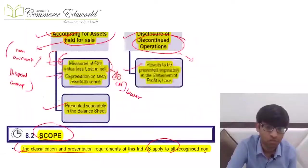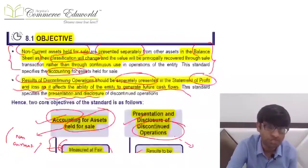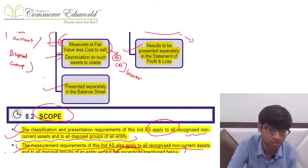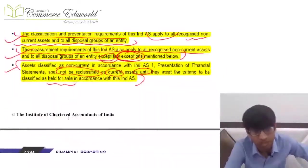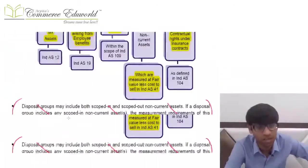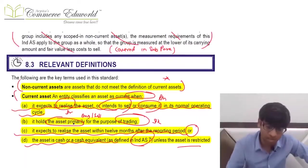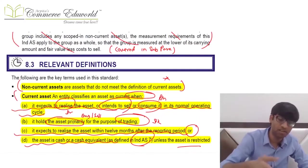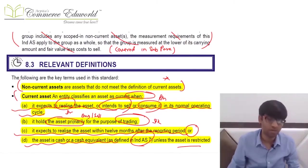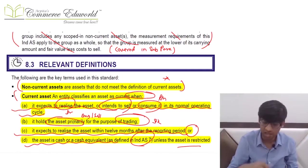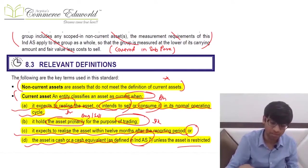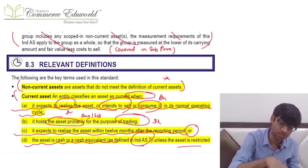In the objective we have considered only one part — the assets which are held for sale. When we say non-current asset held for sale, we must also include disposal group held for sale. The classification and presentation requirement is applicable to all non-current assets held for sale and all disposal groups held for sale.